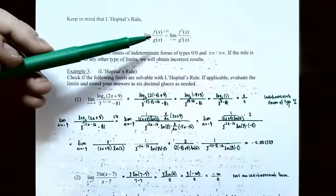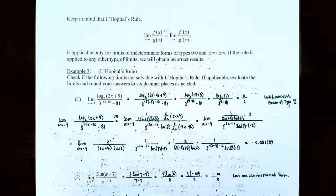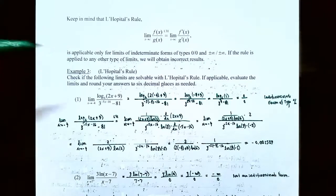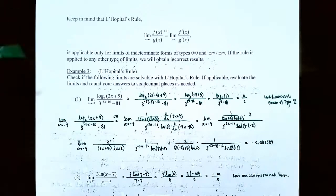You can only use L'Hôpital's Rule if you actually get an indeterminate form of type 0/0 or ±∞/±∞. If you apply L'Hôpital's Rule to any other type of limit that does not give you an indeterminate form, you'll get incorrect results. Let's look at Example 3 of L'Hôpital's Rule.